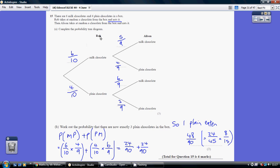Now, Rob eats a sweet. So, as he passes the box over to Alison, there are no longer 10 sweets in it, there are 9 sweets. So that's why the denominator here each time is 9.